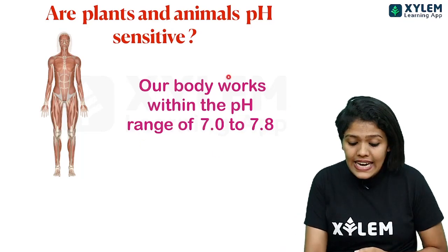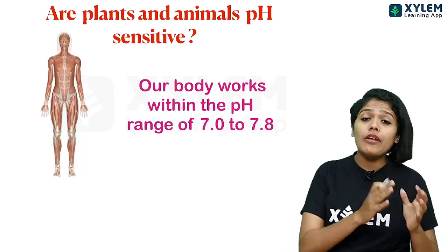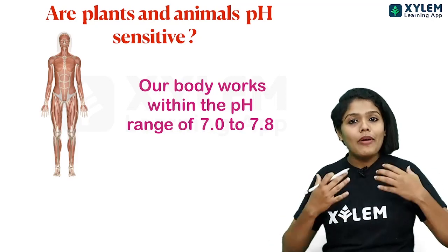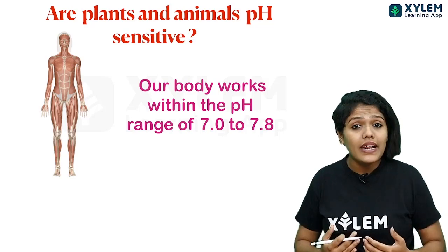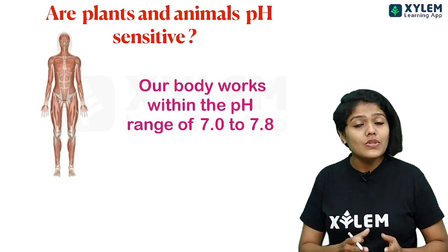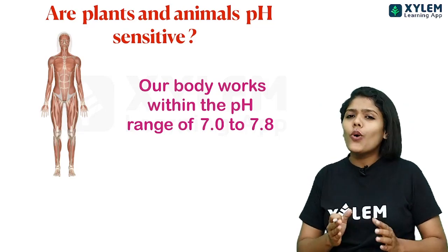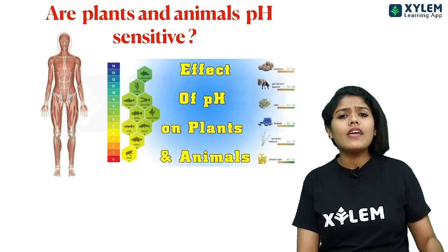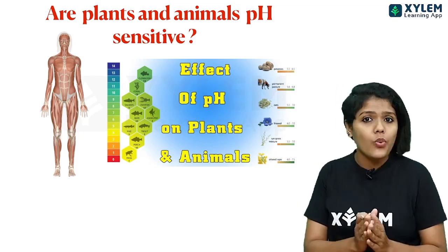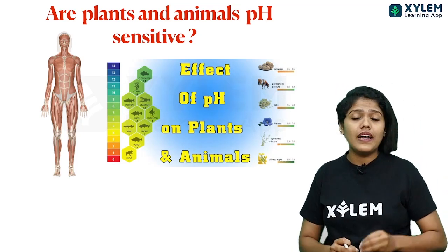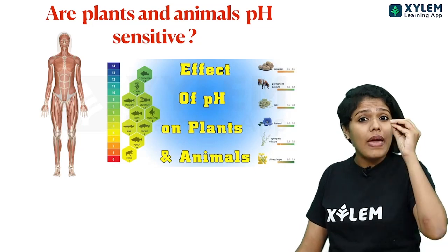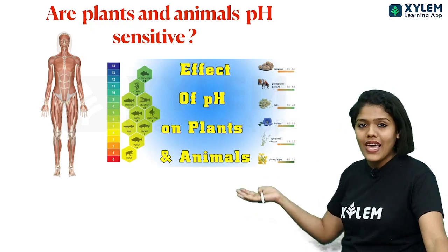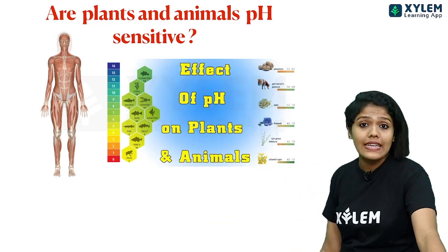Our body needs a pH range of 7.0 to 7.8. Not only human beings — even plants, animals, and fishes — all living organisms need a specific pH range for their survival. It is very important for them to maintain their pH value. Here you can see different kinds of plants and different kinds of aquatic animals.